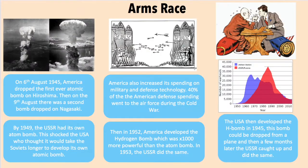On 6 August 1945, America dropped the first ever atomic bomb on Hiroshima. Then on 9 August, a second bomb was dropped on Nagasaki. By 1949, the USSR had created its own atom bomb. This shocked the United States, as they thought the Soviets would have taken longer to develop their own atomic bomb. America also increased its spending on military and defence technology.